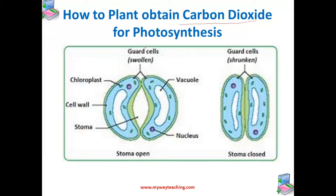There are a large number of tiny pores called stomata — singular: stoma — on the surface of the leaves of green plants. The plants take carbon dioxide from air through these tiny pores present on the surface of the leaves.